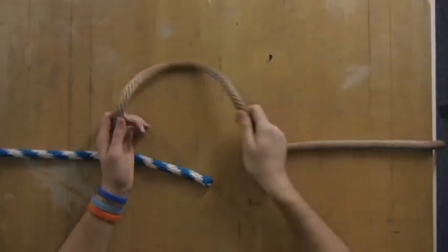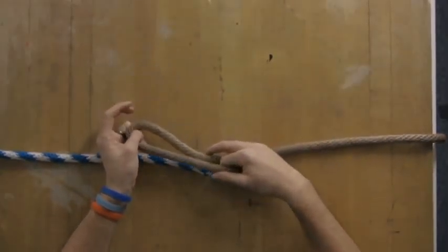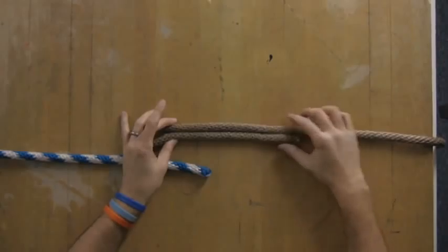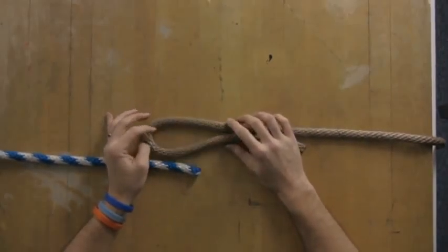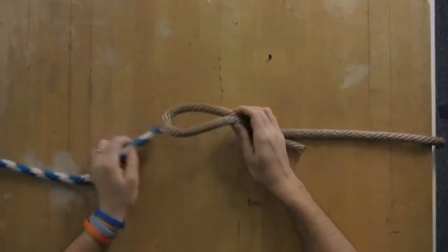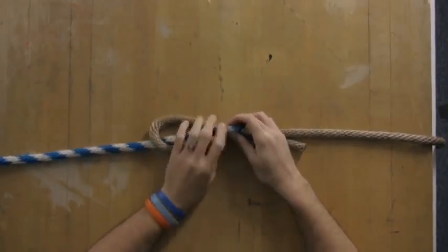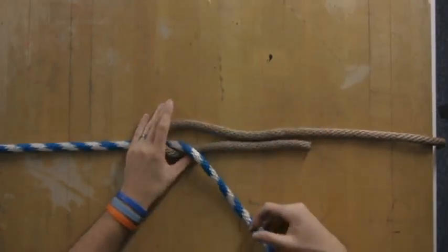So basically you just take your first rope and create a little twist in it so you have kind of an eye hole here, and you'll take your second rope and you'll go up through your original little loop there.